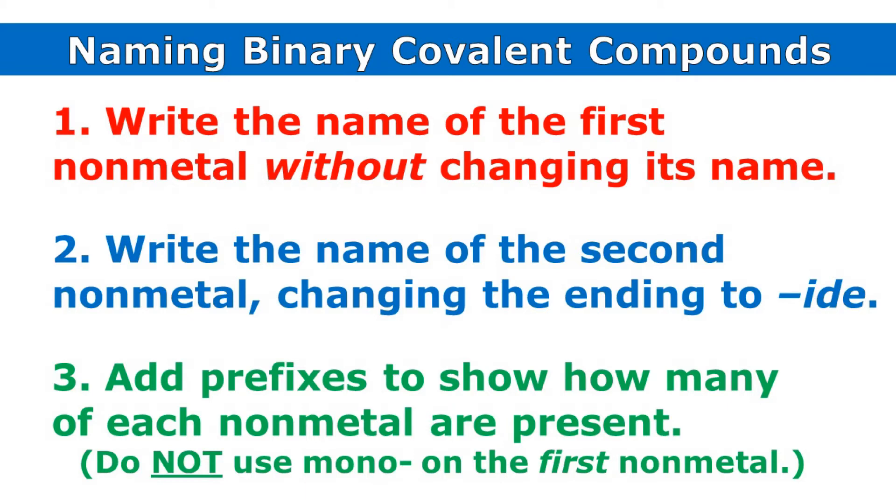To write the name of a binary covalent compound, first we write the name of the first non-metal without changing its name, then we write the name of the second non-metal, changing the ending to -ide.